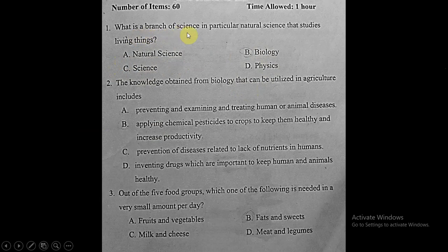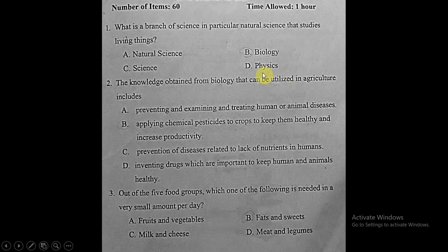The question asks what branch of science, so choice C (science) is cancelled. It says 'in particular natural science,' so A is also cancelled. Between biology and physics — physics deals with matter and energy, while biology studies living things. So the correct answer for question one is choice B: biology.